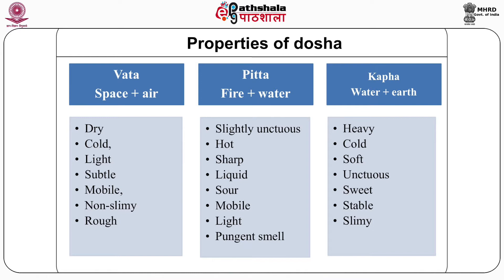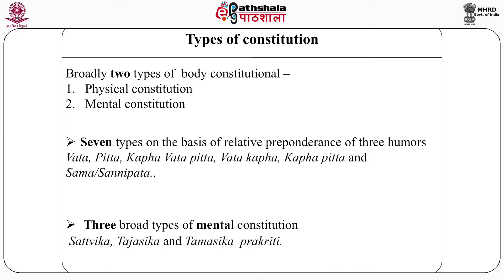In Ayurvedic texts, characteristic features of all seven types of physical and three types of mental constitution have been explained. But only three main types of Prakriti — vata predominant, pitta predominant and kapha predominant — are usually taken for examination of a person or patient. Human constitution can be broadly classified into two types: physical or dosa Prakriti, and mental or manas Prakriti. The seven types of Prakriti are: vata, pitta, kapha, vata-pitta, vata-kapha, kapha-pitta and sama Prakriti (the sannipataja Prakriti).